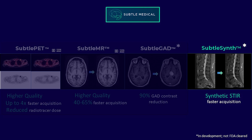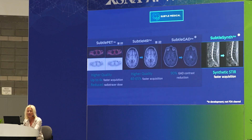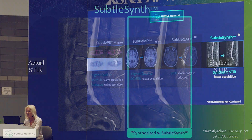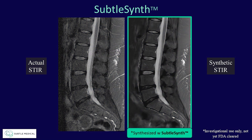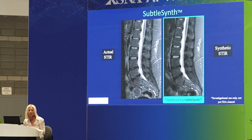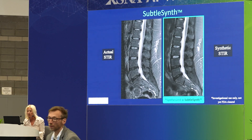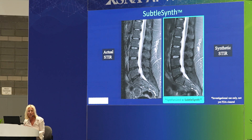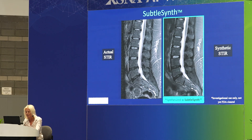Let's talk now about Subtle Synth — I'm very excited about this product, which is in development right now. Basically what they're doing is synthesizing the STIR sequence. Eventually they'll synthesize sequences throughout the body in different exams. They started with STIR because STIR traditionally is a signal-deprived sequence — it takes a long time, often almost up to five minutes. Basically you can shave off all this time on the exam by synthesizing it. This is done using the sagittal T1 and sagittal T2 inputs to synthesize the STIR.